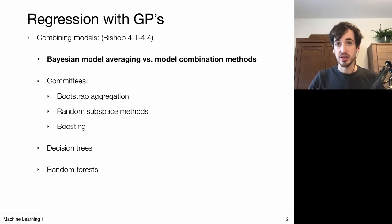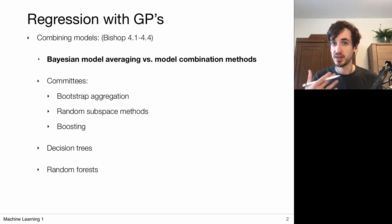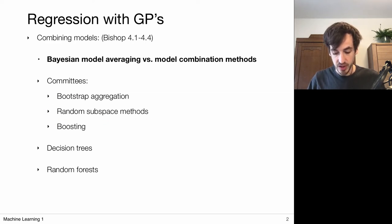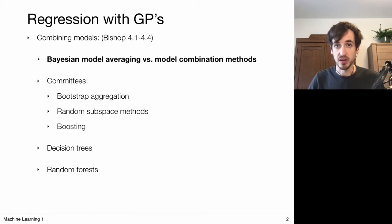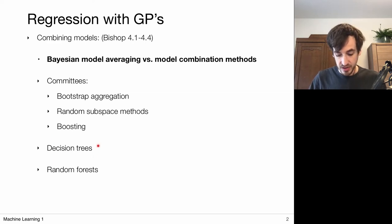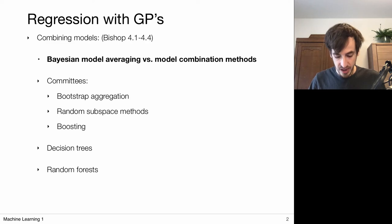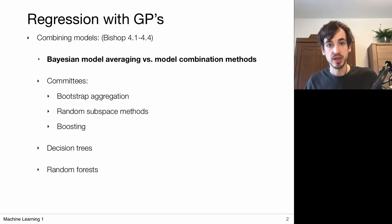I could have a committee or a set of classifiers and combine them to come up with final predictions. We will cover bootstrap aggregation and random subspace methods, then boosting to obtain a committee of classifiers or regressors. Finally we cover decision trees, which are extremely powerful and simple to use in combination with these methods. Combining decision trees with bootstrap aggregation and random subspace methods gives us random forests — another very powerful machine learning method.